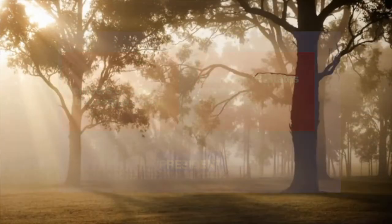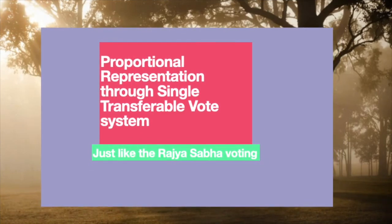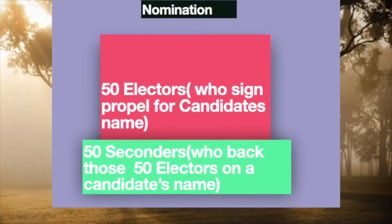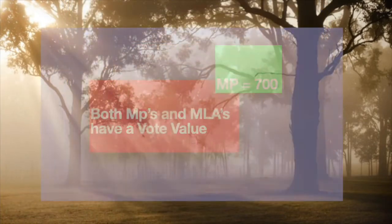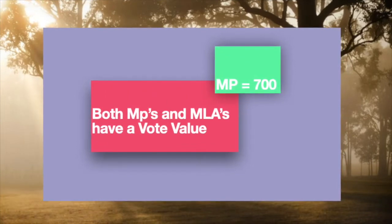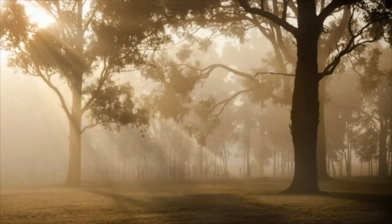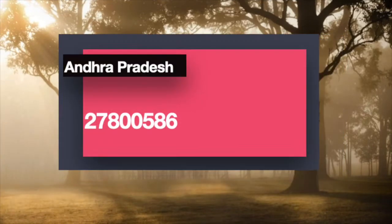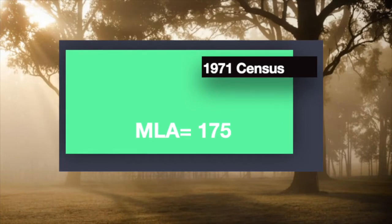Now that we know the members of both houses and all state and UT legislative assemblies vote for the president — election process: proportional representation by means of Single Transferable Vote. To be nominated for president, one must have 50 electors who sign the proposal for a candidate's name and 50 seconders who back those 50 electors. This was introduced to discourage non-serious candidates. Now both MPs and MLAs are assigned a vote value. For example, the value of an MP's vote is 700. To understand how it's calculated, you first have to understand how the value of MLAs is assigned: it depends on the state's population and the strength of the legislative assembly.